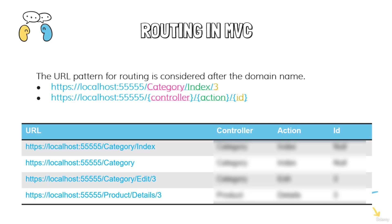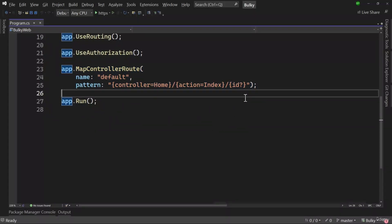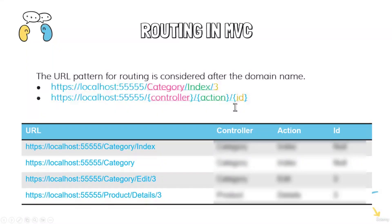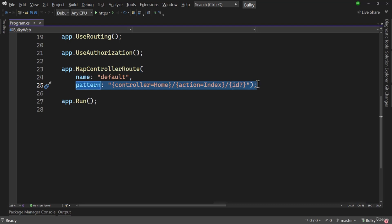For example, with the URL localhost/category/index/3 — 'category' is the controller name, 'index' is the action name, and '3' is the optional ID. The ID field has a question mark, meaning it can be defined or null. That is the default pattern in the .NET project. Of course we can modify things in later videos, but this is the default: controller, then action, then optional ID.